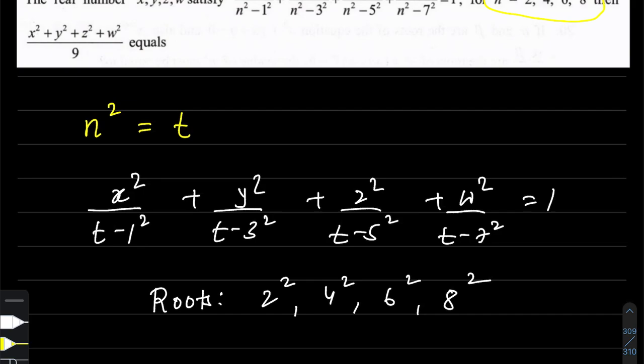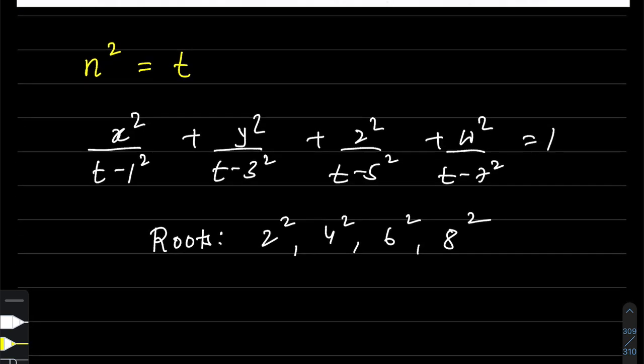The roots are 2², 4², 6², and 8², which are 4, 16, 36, and 64. Here we have a bi-quadratic equation, a degree 4 polynomial equation.